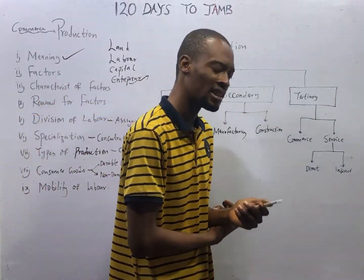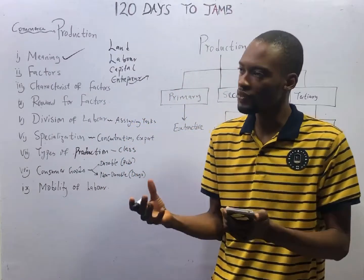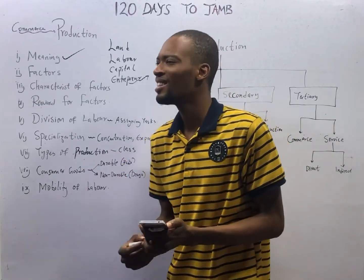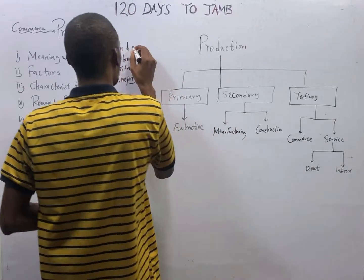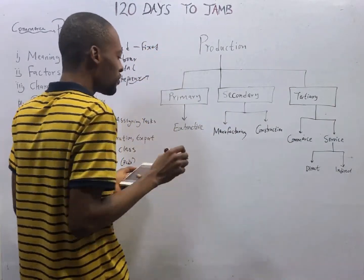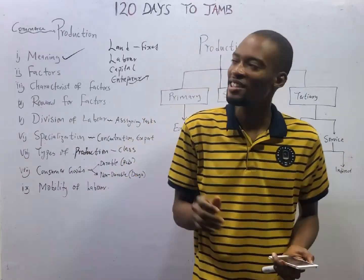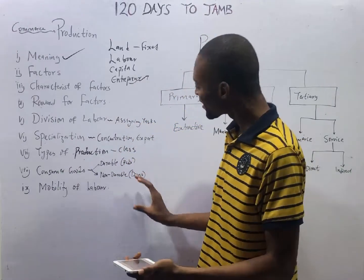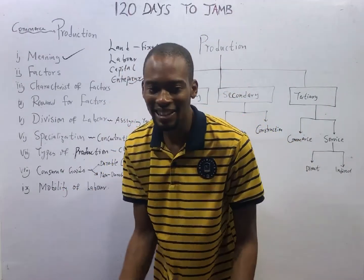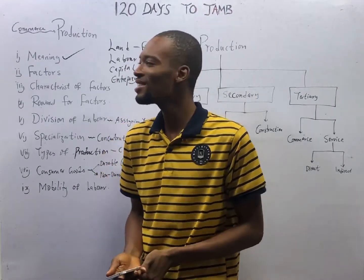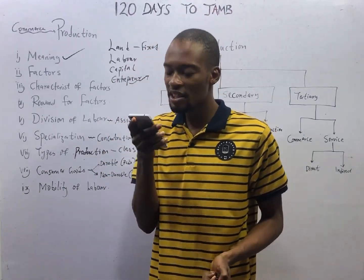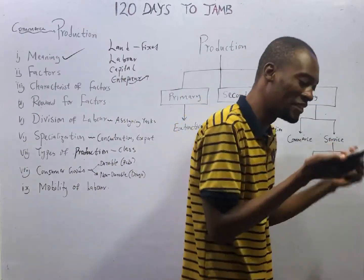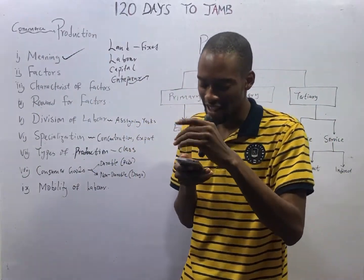What are the characteristics of land? One, land is a free gift and it is fixed in supply. This simply means you cannot increase the amount of land available. The land mass of the earth remains the same — you cannot add land or reduce land. Land is also immobile; you cannot be carrying land from place to place.